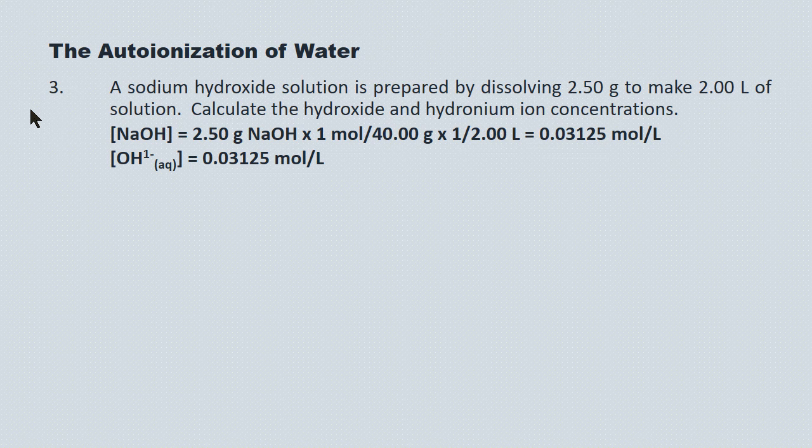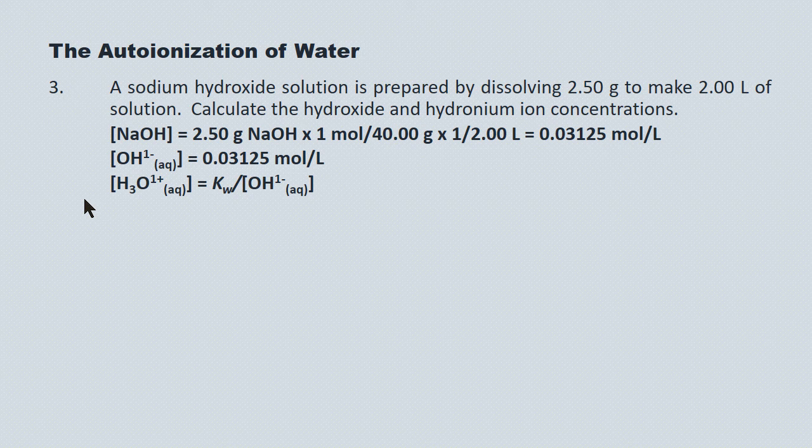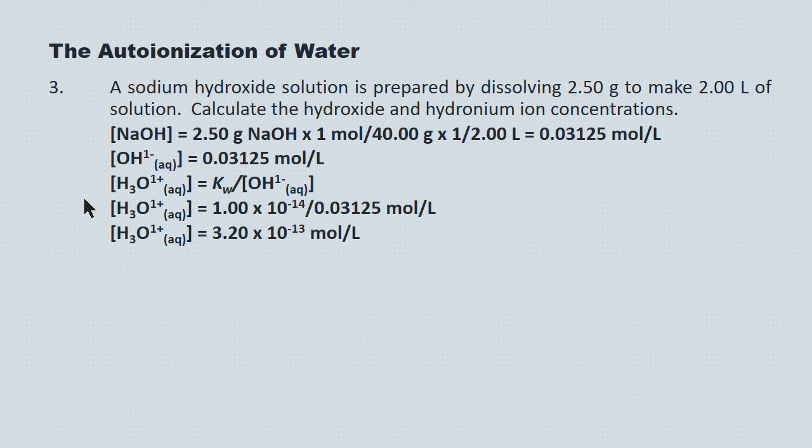That concept holds true not only for strong bases but also for strong acids. Put a strong acid into solution and by definition it ionizes completely, so the final concentration of hydronium ions in a strong acid will equal the initial concentration of the molecular acid. Coming back to the sodium hydroxide, we now have the hydroxide ion concentration and need to solve for hydronium. Hydronium equals Kw over hydroxide, and substituting in, we get a hydronium ion concentration of 3.20 times 10 to the minus 13 moles per liter.